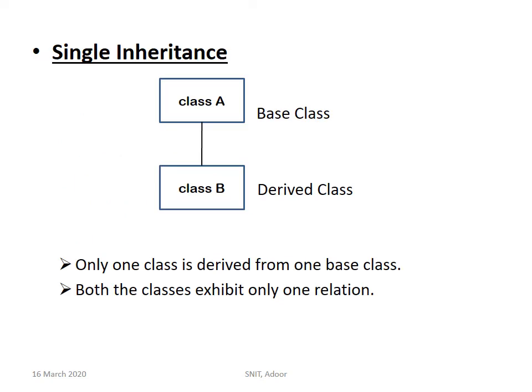First we will see what single inheritance is. In this structure I have shown two classes: class A and class B. Class A is the base class and class B is the derived class — A is the parent and B is the child. The derived class has been generated from the base class. When we call class B for execution, naturally class A will also be executed. Here a one-to-one relationship is there — only one class is derived from one base class.